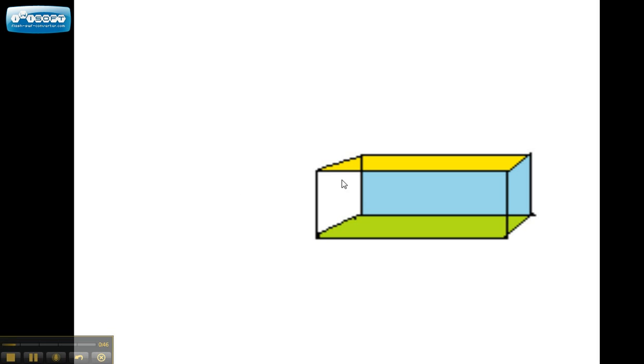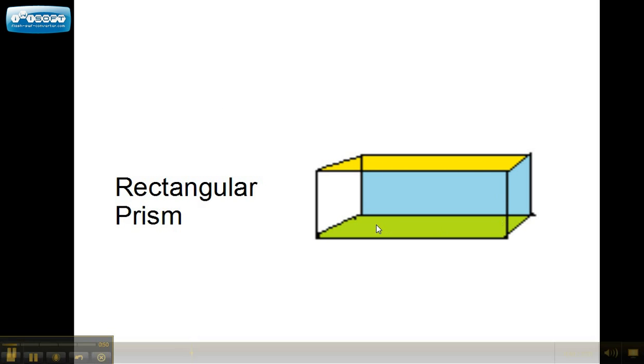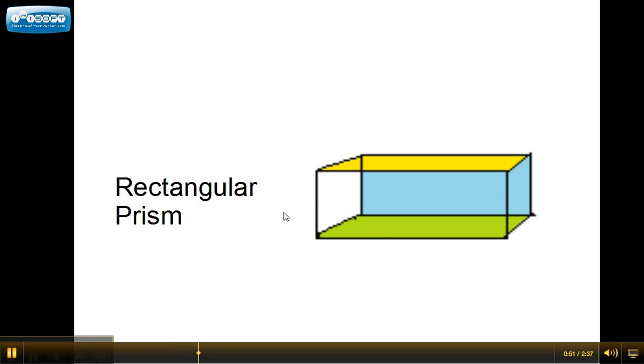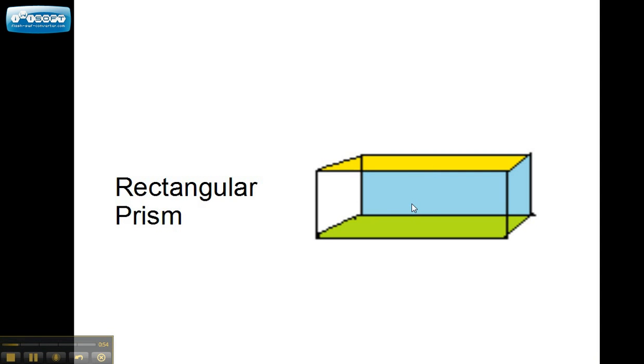After that, we have a rectangular prism. You can see there are rectangles here, and it is shaped like a box. It's a shoebox, if you will. Rectangular prism.